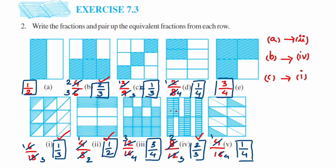For D, the fraction is 1 upon 4, which matches the fifth figure in the second row. For E, the fraction is 3 upon 4, which matches the third figure of the second row.